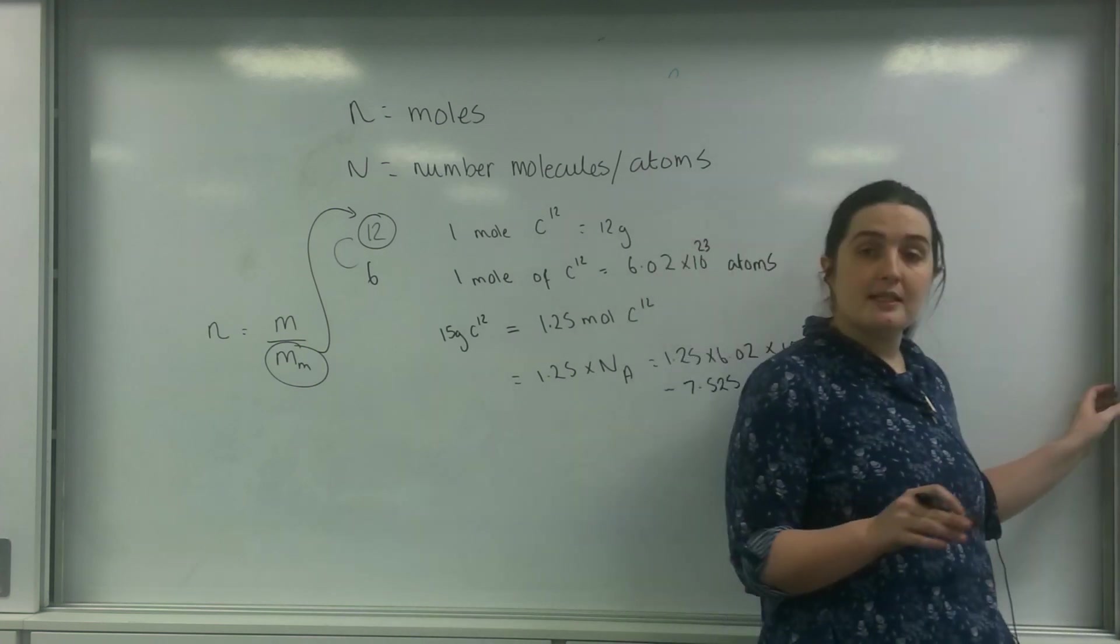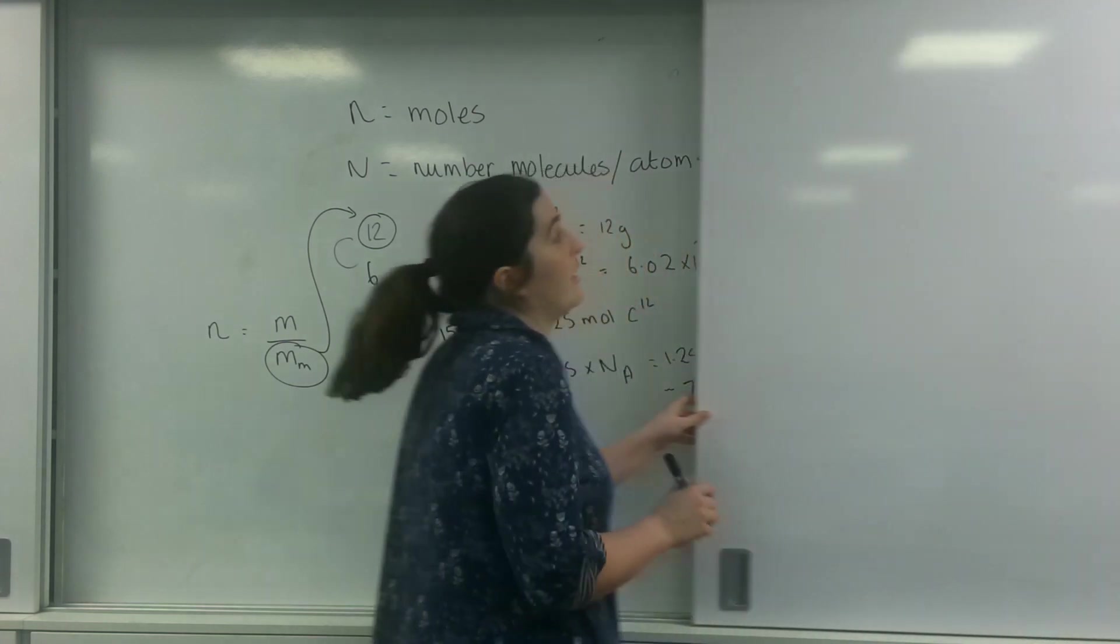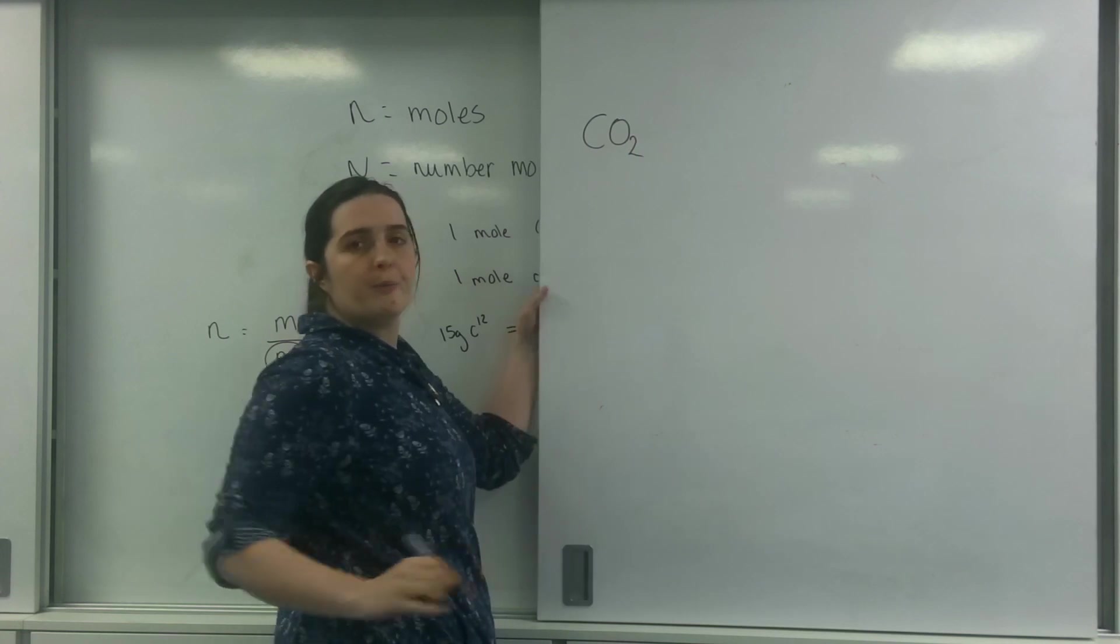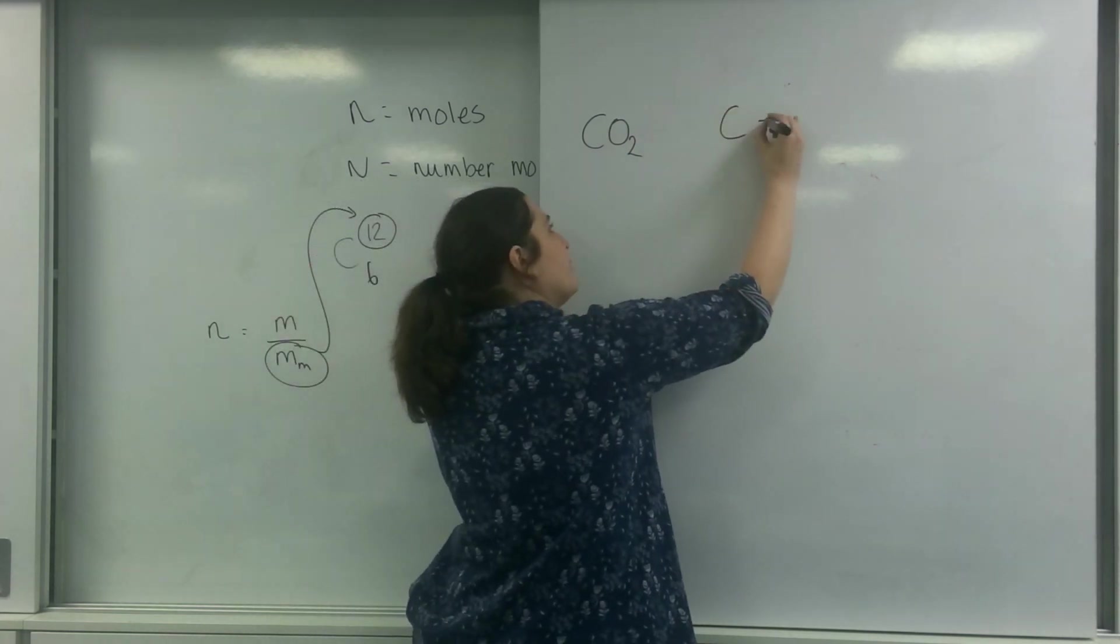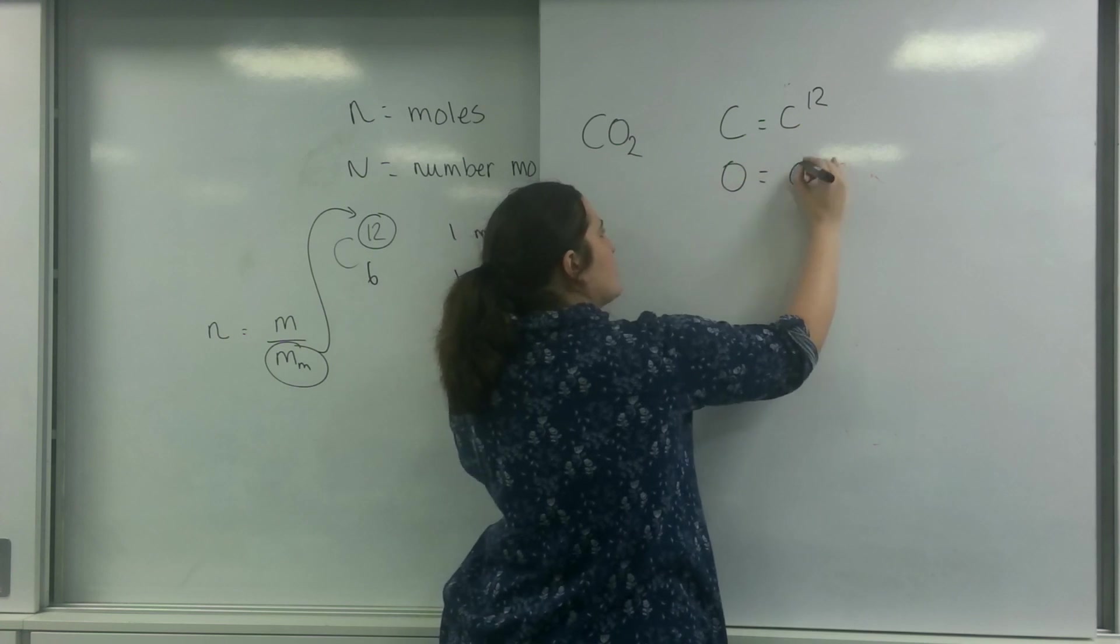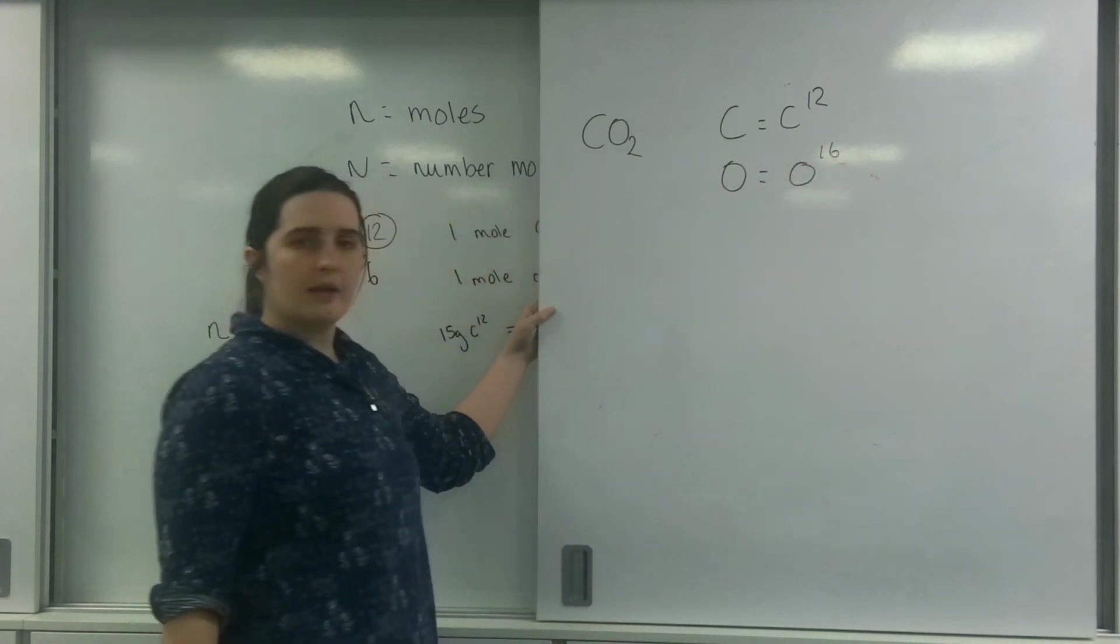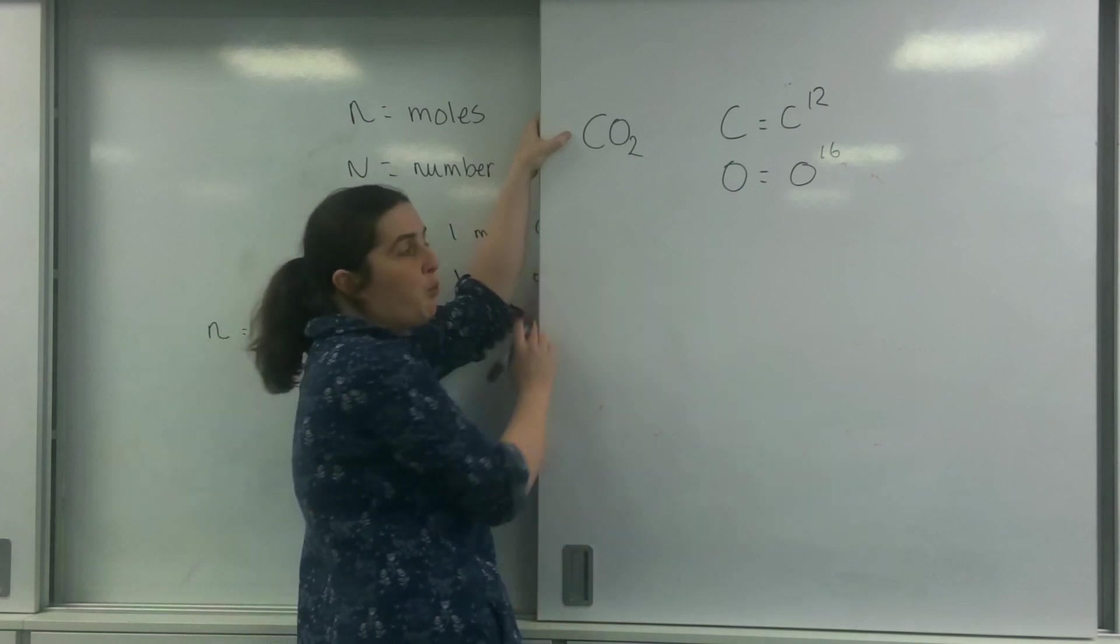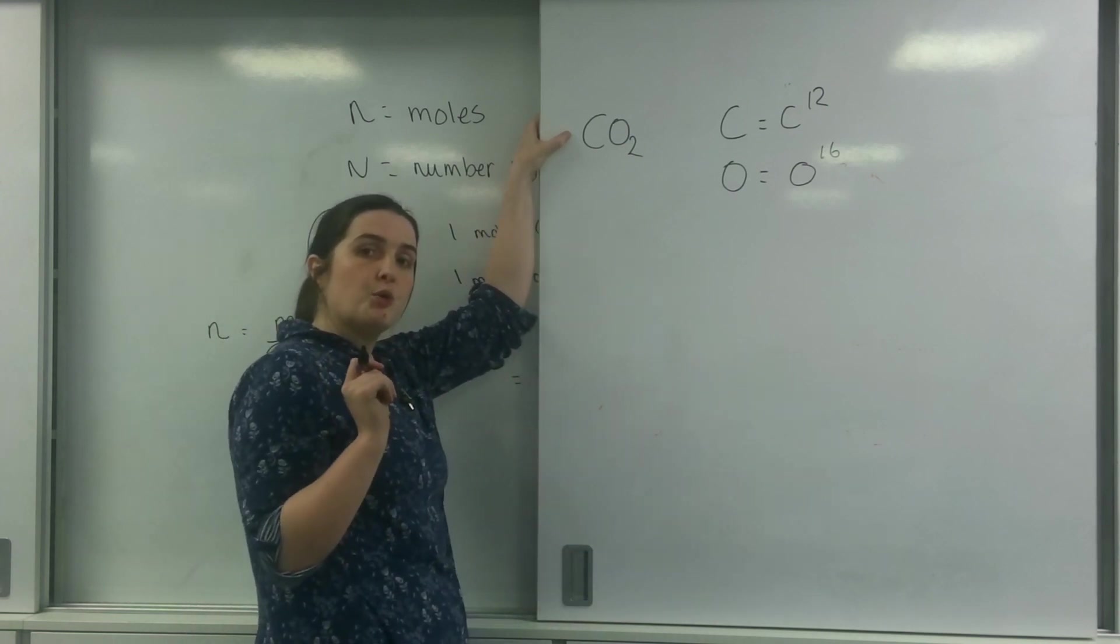Now let's say I had something different. Let's say I had carbon dioxide. So I've got carbon dioxide, CO2. I know carbon is C12 and oxygen is oxygen 16. So in this molecule here, I've got one carbon and two oxygens.